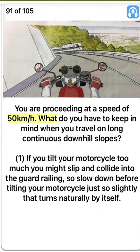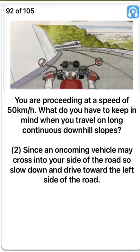You are proceeding at a speed of 50 km per hour. What do you have to keep in mind when you travel on long continuous downhill slopes? True. If you tilt your motorcycle too much you might slip and collide into the guard railing. So slow down before tilting your motorcycle just so slightly that it turns naturally by itself. True.